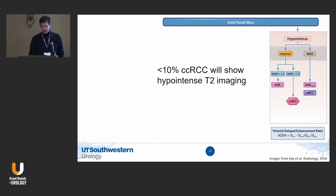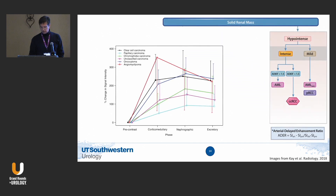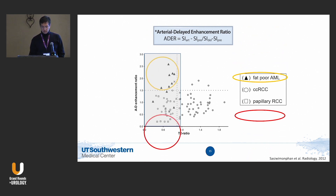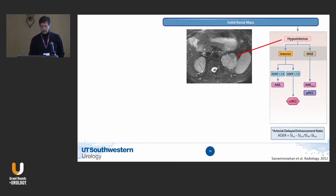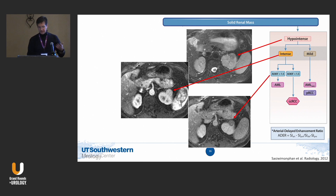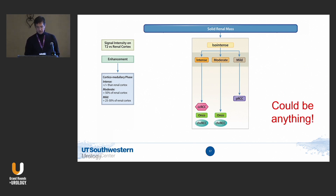About 10% of clear cells can be hypointense on T2. In those cases, we calculate something called the arterial-to-delayed phase enhancement ratio at the corticomedullary phase — you can get actual numbers for enhancement on MRI. This ratio allows you to separate fat-poor AML from clear cell carcinoma very well. If the ratio is greater than 1.5, it's an AML. The only problem is the indeterminate middle group, where it could be anything.